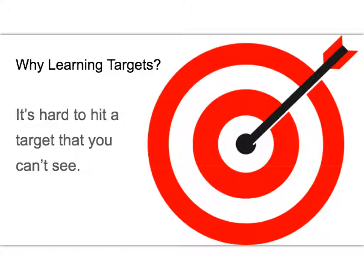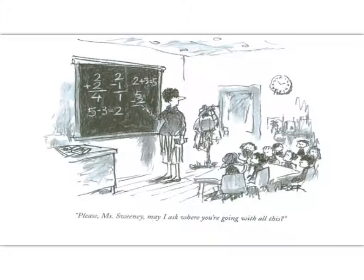Why is it so important to have learning targets? It's pretty simple — pretty hard to hit a target that you can't see. If we want students to learn specific things we need to direct them toward those things. Students are going to be much more successful in their learning if they know where they're heading and why. There are times of course where we will want inquiry learning or a more open-ended experience, but most of the time we want it to be very clear. We don't want there to be any surprises — this is what we're trying to learn, this is why it's important, this is where we're heading.